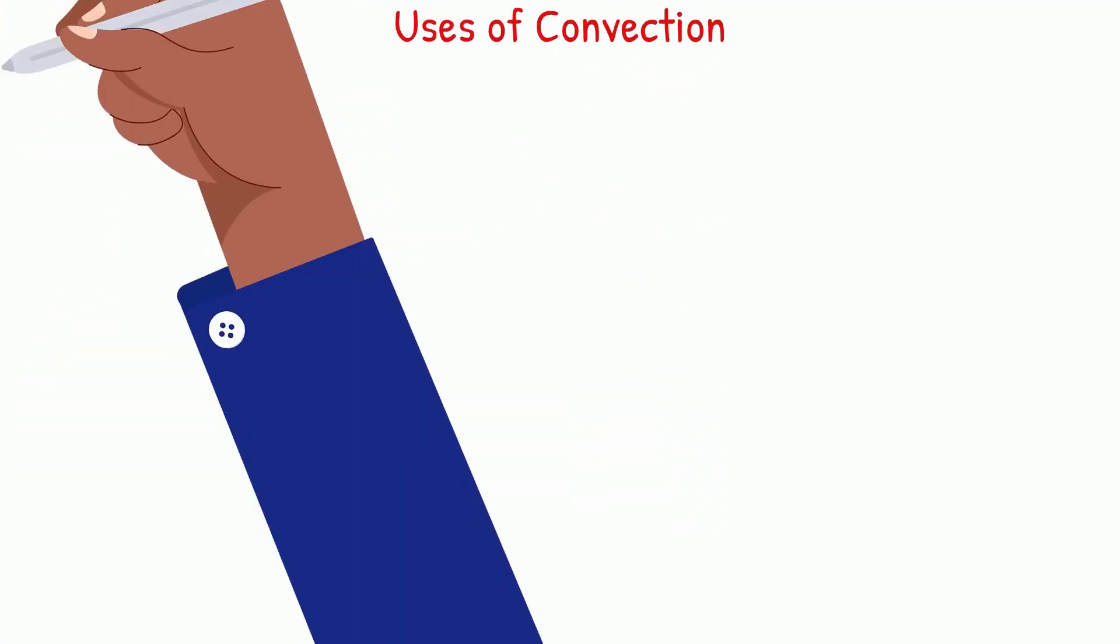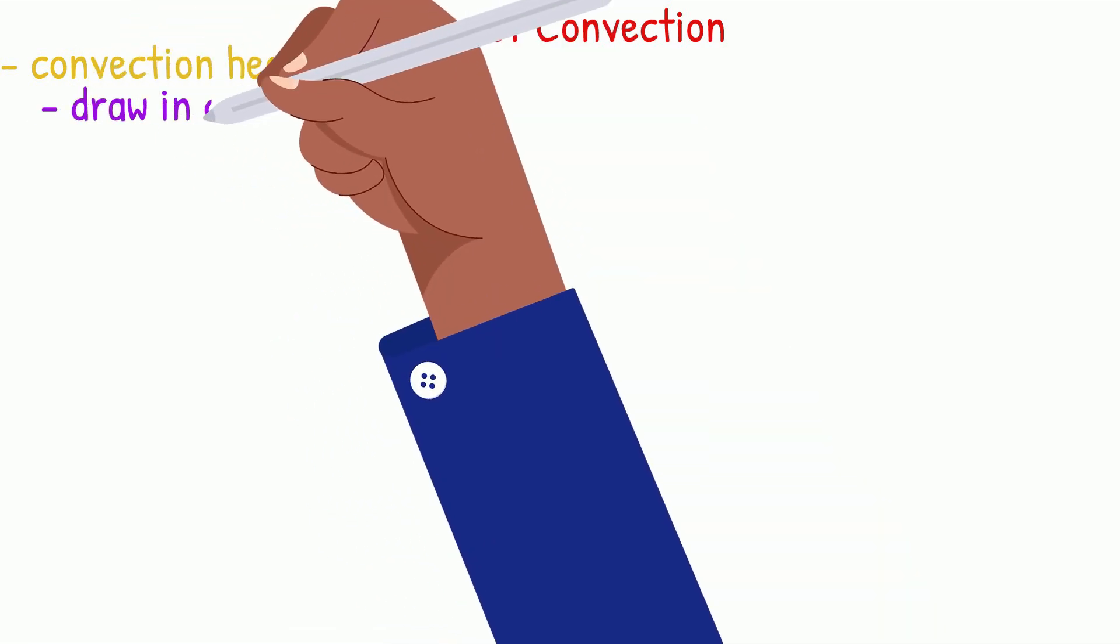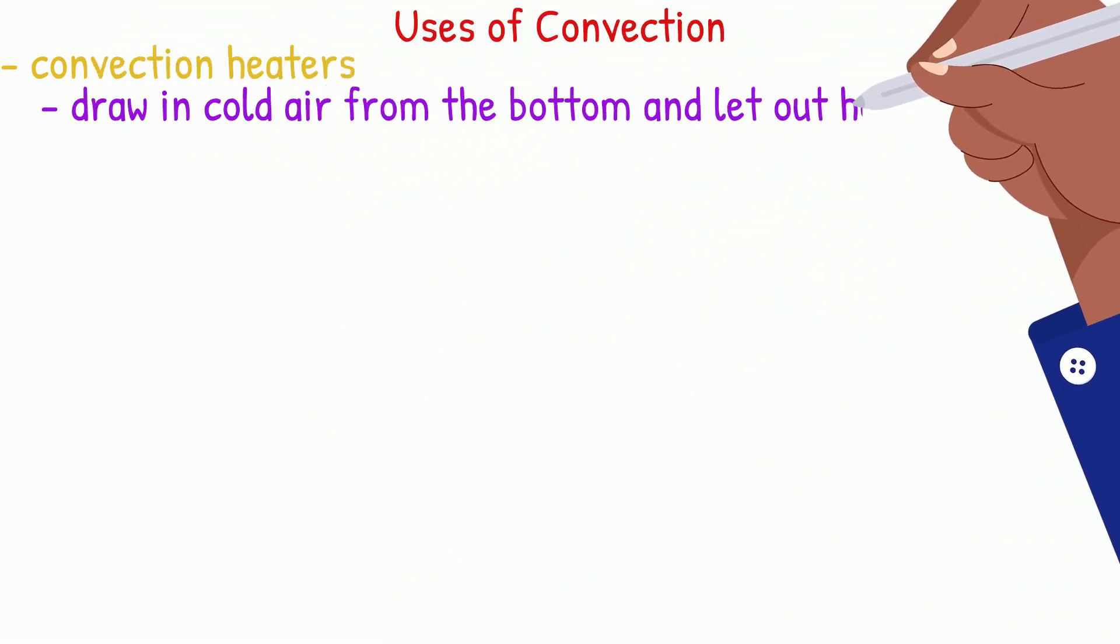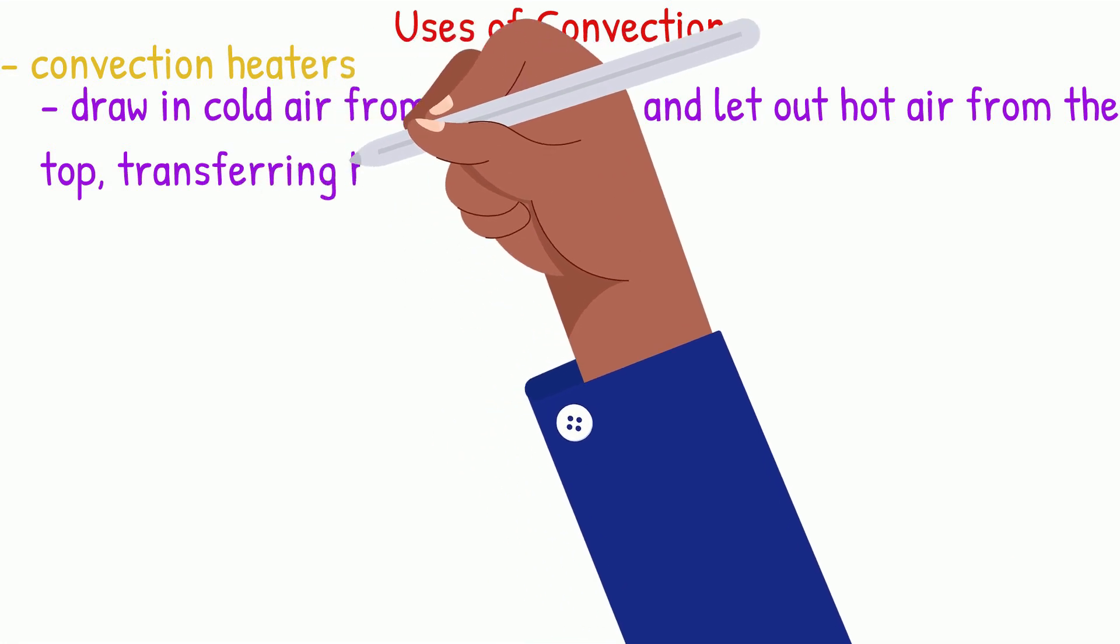There are many practical observations of convection. Convector heaters draw in cold air from the bottom and let out hot air from the top, transferring heat to all parts of the room.